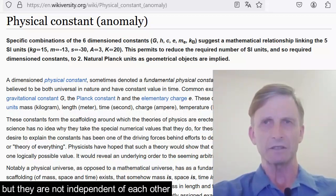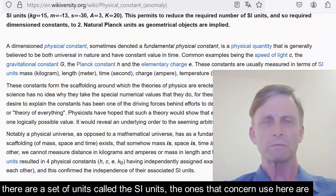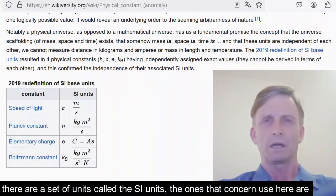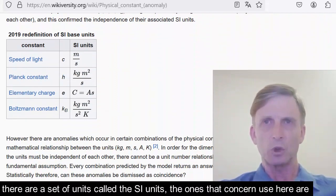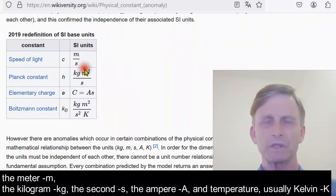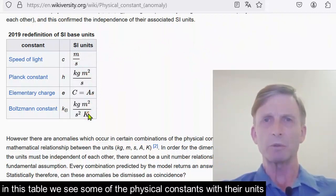There are a set of units called the SI units. The ones that concern us here are the meter, the kilogram, the second, the ampere, and temperature, usually kelvins. In this table, we see some of the physical constants with their units.